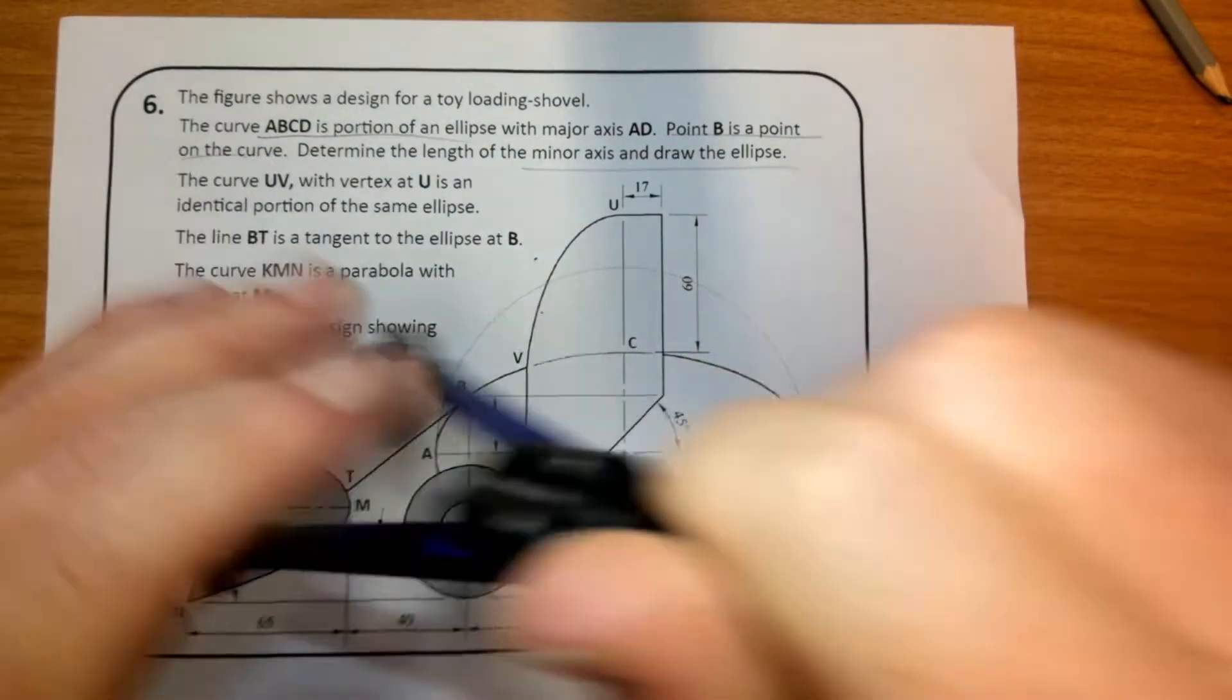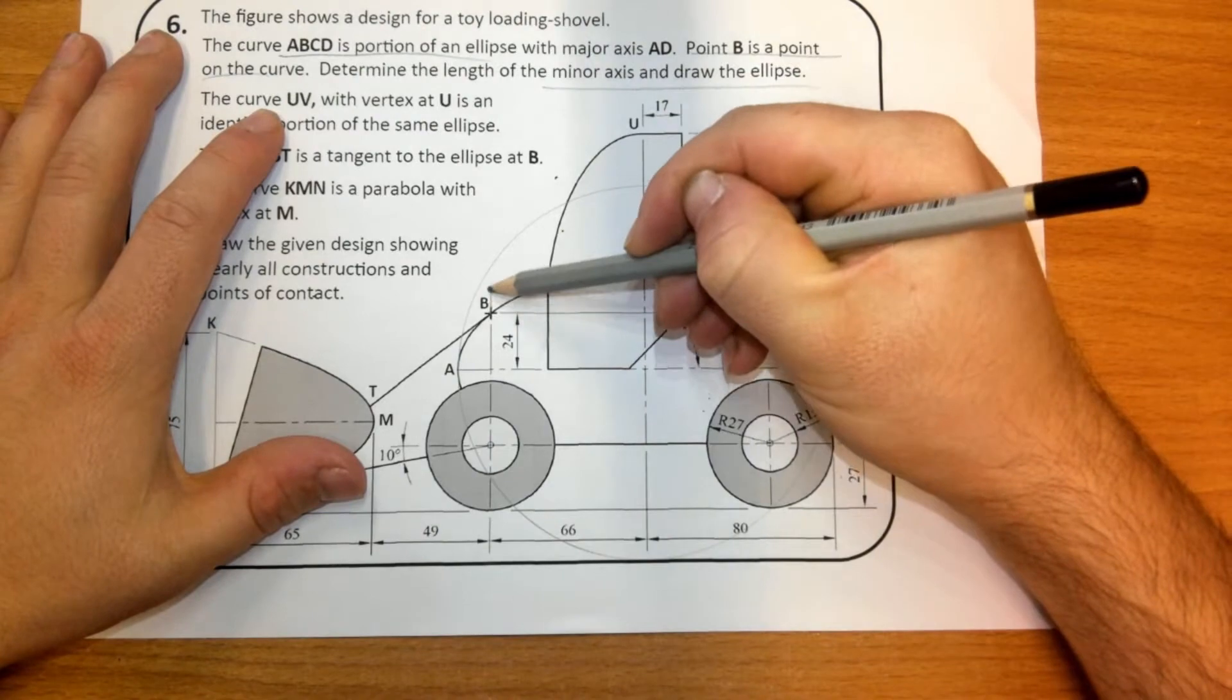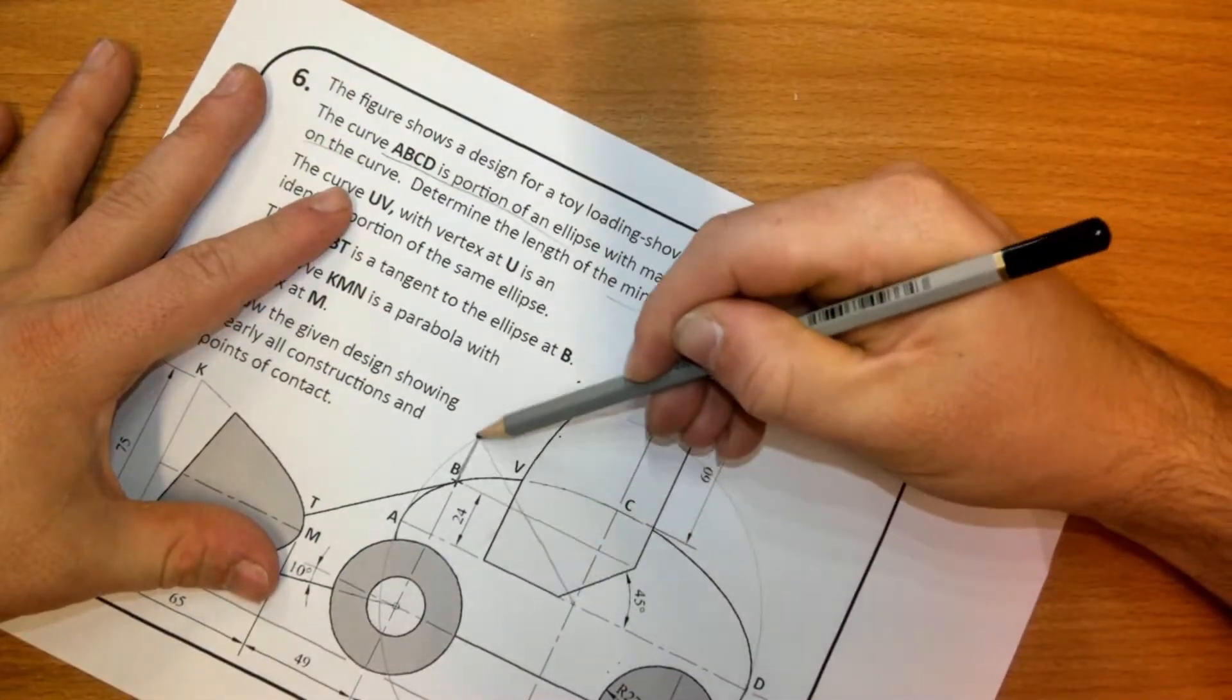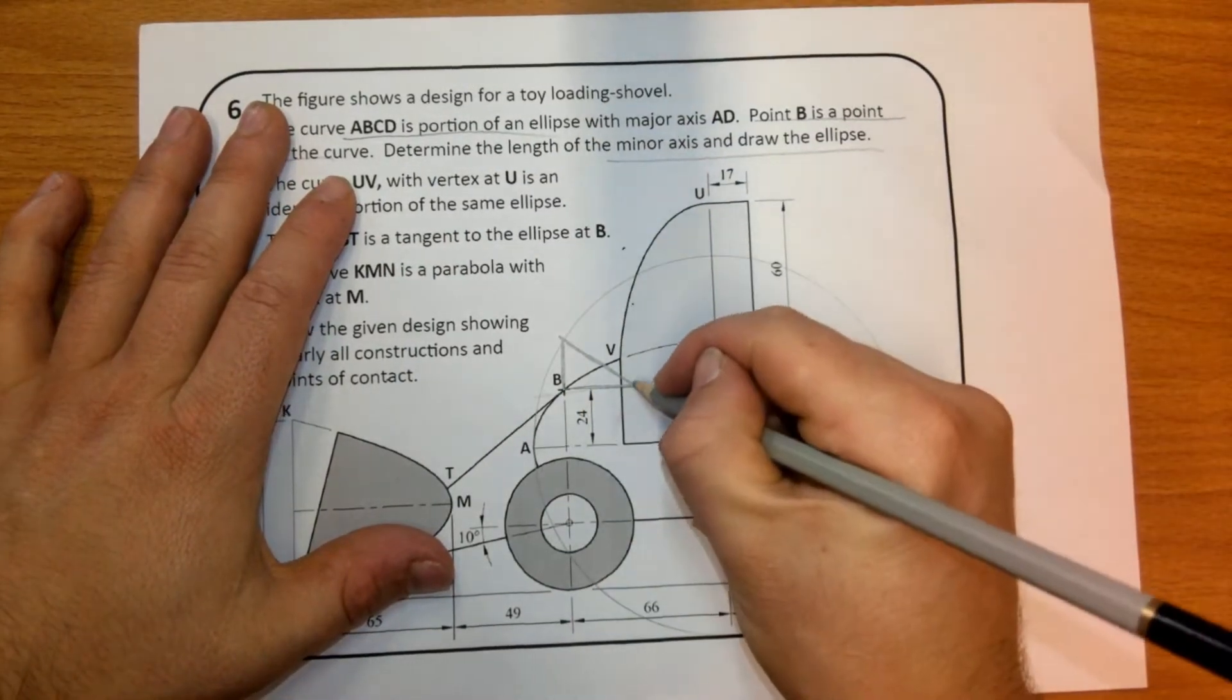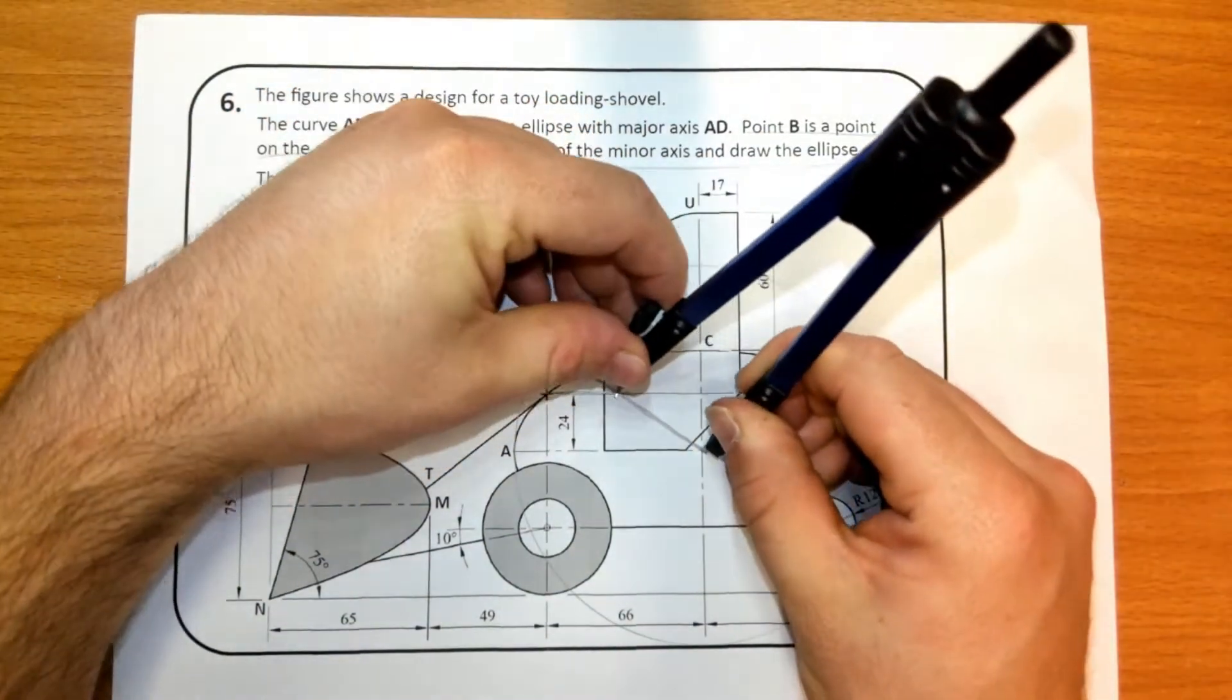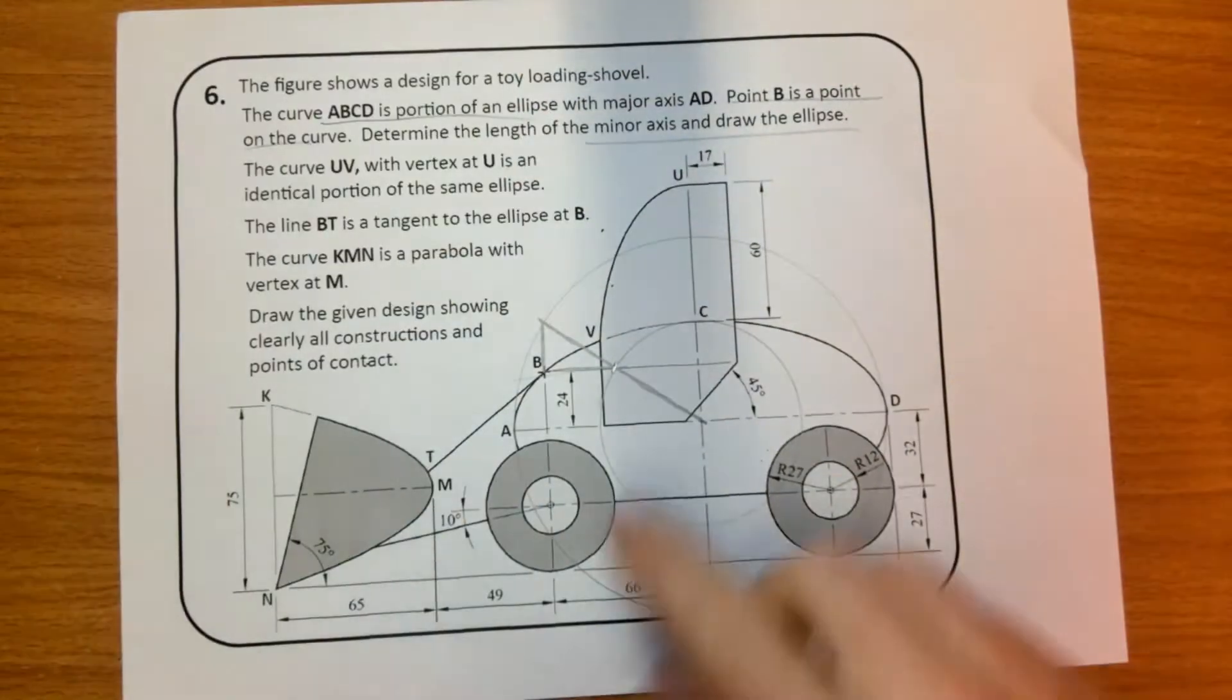You draw parallel from B to the minor axis, because it touches the major circle, you join it back to the circle there. Then you go straight across from B, and that's going to be a point on the minor circle. You can draw the circle in there, and that's how you find the minor circle.